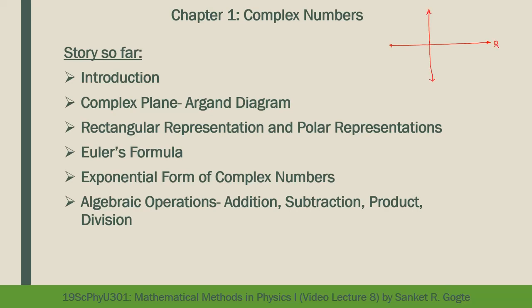The horizontal axis is the real axis and the vertical axis is the imaginary axis. For a complex number z = x + iy, dropping perpendiculars from the point gives length x on the real axis and length y on the imaginary axis. Joining the point to the origin gives length r, the modulus of the complex number, equal to √(x² + y²) by the Pythagorean theorem. The angle θ made by this line with the positive real axis is the argument, calculated as tan⁻¹(y/x).